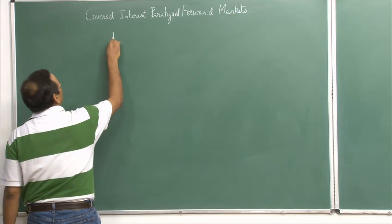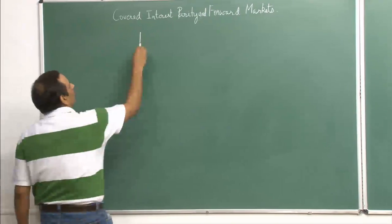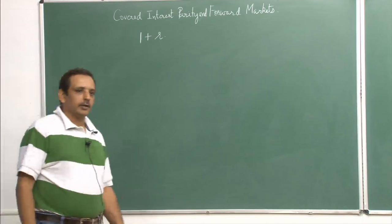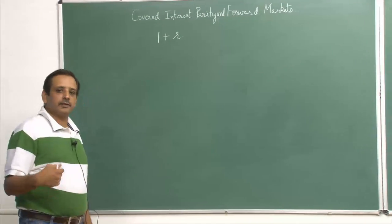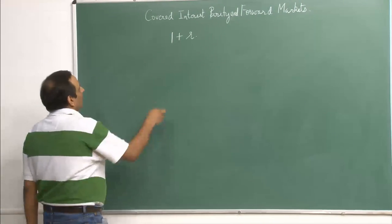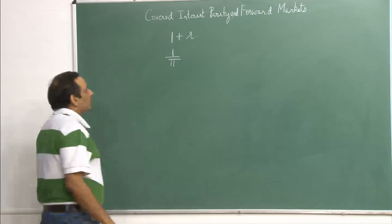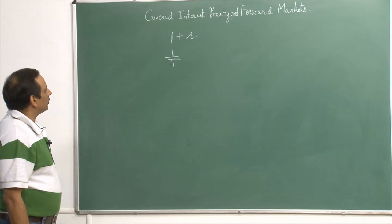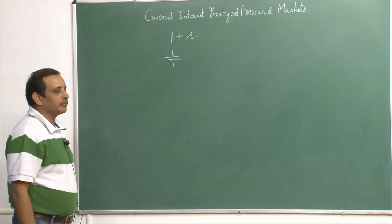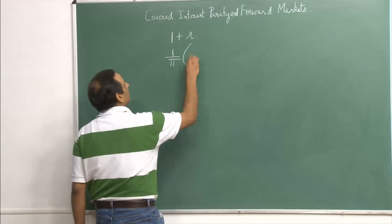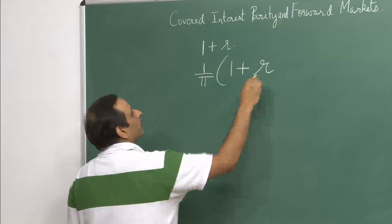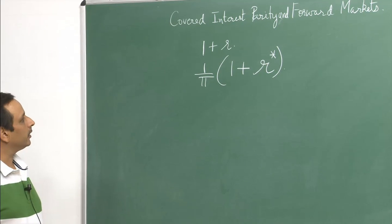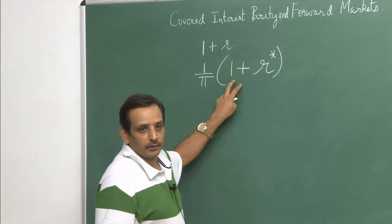If you have a rupee to invest, you would get a return of (1 + r) at the end of the year if you invest it in your own country. The other option is that you take this 1 rupee outside by converting it into the foreign currency using the exchange rate. So (1/π) is the corresponding value of 1 rupee in terms of the foreign currency. If you invest it in their banks, then the return that you would get is (1/π)(1 + r*). This is the return you would get at the end of the year in the foreign country.